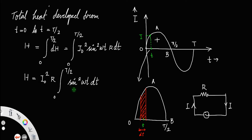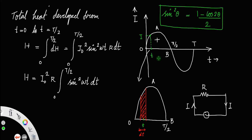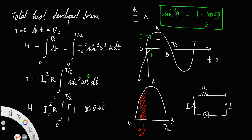We cannot directly integrate sin²ωt dt, so we have to make this into a convenient form. For that, we can use the identity sin²θ = (1 − cos2θ)/2. Here ωt is θ, so 2θ is 2ωt. Substituting, the heat H = i₀²r · integral from 0 to T/2 of (1 − cos2ωt)/2 · dt.